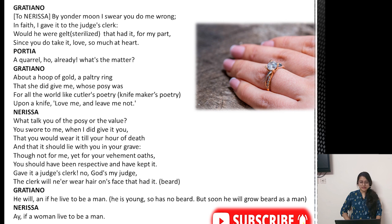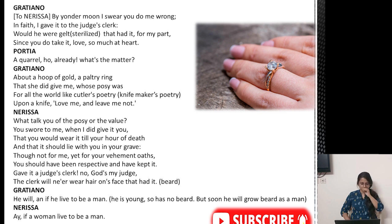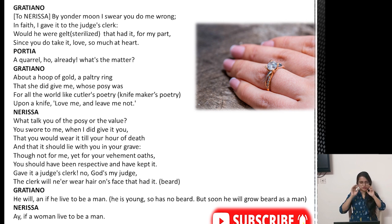Portia asks: what's the matter? About a hoop of gold, a portrait ring that she did give me, with a posy — meaning there was a poem written on the ring. Sometimes a poem or a word is inscribed on a ring. For all the world like cutler's poetry — meaning it seemed the poem was also written by the knife maker himself; it was not that good at all. What was written was: love me and leave me not. That was not good poetry, and because of giving away the ring, his wife is shouting at him.